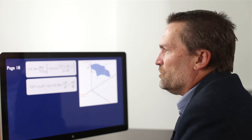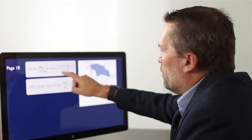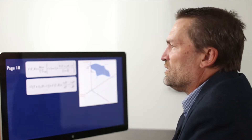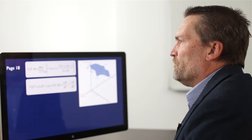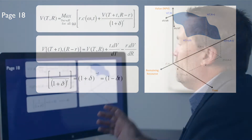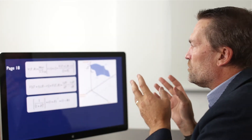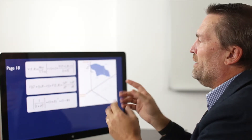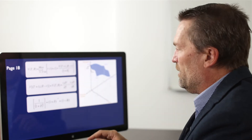The second thing we want to do is take the discounting part of the formula and make a simpler version of it. Using the binomial theorem, we can approximate 1 over (1 plus the discount rate) to the time t as being, to the first order, 1 minus delta t. We then substitute those two formulas back into the equation to get the following formula.